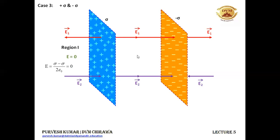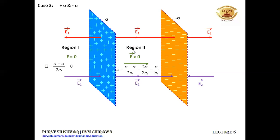In region 2, the electric fields due to these two sheets are acting in the same direction. So the result will not be 0, and the net field is sigma plus sigma upon 2 epsilon naught. Since E1 is sigma upon 2 epsilon naught and E2 is also sigma upon 2 epsilon naught, when you add them the twos cancel and you are left with sigma upon epsilon naught.